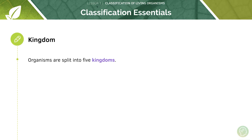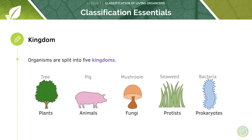Organisms are split into five kingdoms: plants, animals, fungi, protists, and prokaryotes.